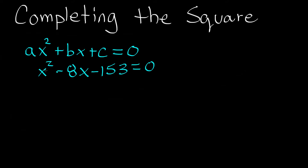The very first step in completing the square is we need our a coefficient to be one. In our case a is one — one times x squared is just x squared — so we have a coefficient of one for our x squared term, and we are good there.